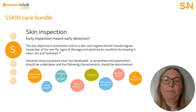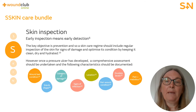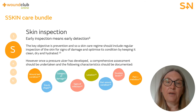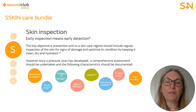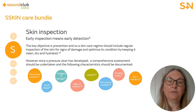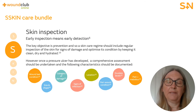Skin inspection: regularly inspecting a patient's skin to identify skin abnormalities is a key practice in pressure ulcer prevention. Initial skin inspection should identify any broken or moist areas, any areas of excoriation or any pre-existing skin conditions. The key objective is prevention, and so a skin care regime should include regular inspection of the skin for signs of damage. The patient's skin should be examined systematically from head to toe. Although pressure ulcers most commonly occur over bony prominences, they can be found under medical devices such as masks or catheters. A patient's consent must be obtained prior to a skin inspection.